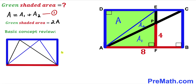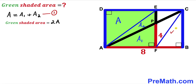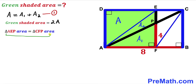Now I am going to connect the two vertices F and C. Applying the equal-area concept, the area of triangle AEP is equal to the area of triangle CFP. We know the area of triangle AEP is A sub 1, so the area of triangle CFP is also A sub 1.